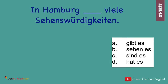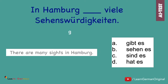Here is the seventh one. In Hamburg... viele Sehenswürdigkeiten. You have to fill in the correct verb. And the correct answer is: In Hamburg gibt es viele Sehenswürdigkeiten.